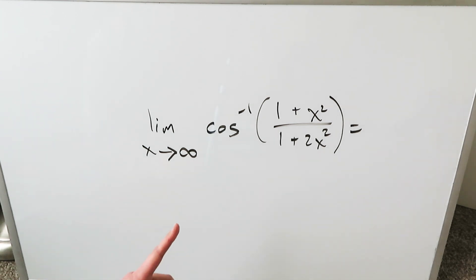Limit as x approaches infinity, we have the arc cosine or the inverse cosine and that rational function, 1 plus x squared divided by 1 plus 2x squared.